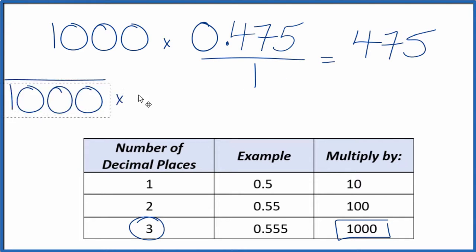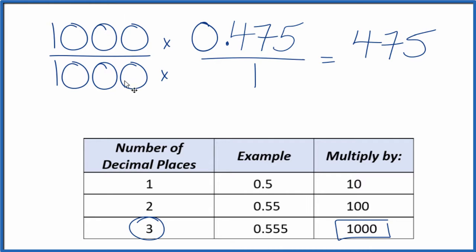That's because a thousand over a thousand is one. We're just multiplying by one. We don't change the value, just the way it's represented. So a thousand times one, that is one thousand. And now we have our fraction: 475 over a thousand is the same as the decimal 0.475.